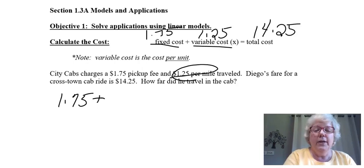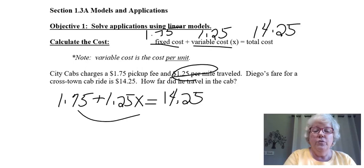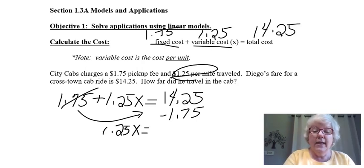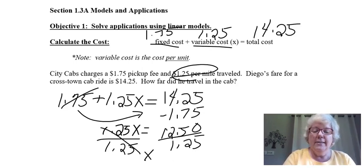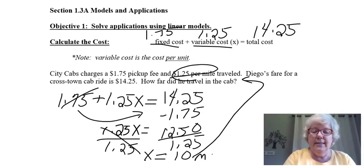Let's solve that. 1.75 plus 1.25x equals 14.25. We'll solve for x. First I'll move over the 1.75 and change the sign, so I'm left with 1.25x equals 12.50. Then to get the final answer I'll divide by 1.25 on both sides. You may use a calculator if it would be easier with all these decimals. So x equals 10, which means Diego traveled 10 miles.